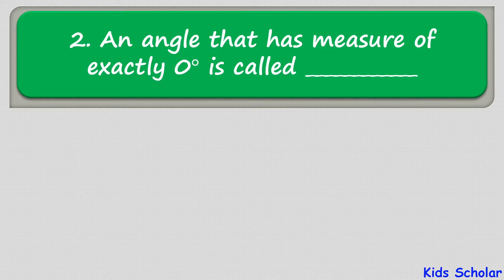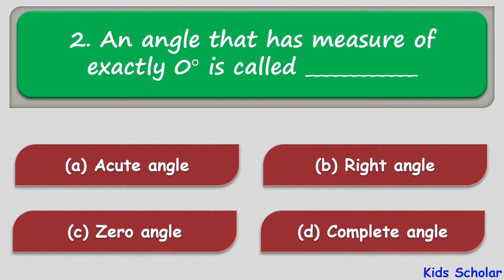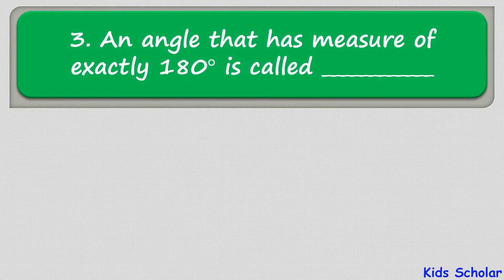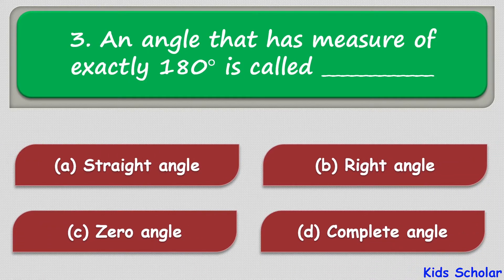The second question is: an angle that has a measure of exactly 0 degrees is called — the options are acute angle, right angle, zero angle, or complete angle. The correct answer is zero angle.